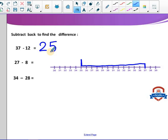27 minus 8. We determine where is 27 first. We determine where is 27 and count back 8. 27: 1, 2, 3, 4, 5, 6, 7, and 8. Here we have 19 before 20. So here we have 19.